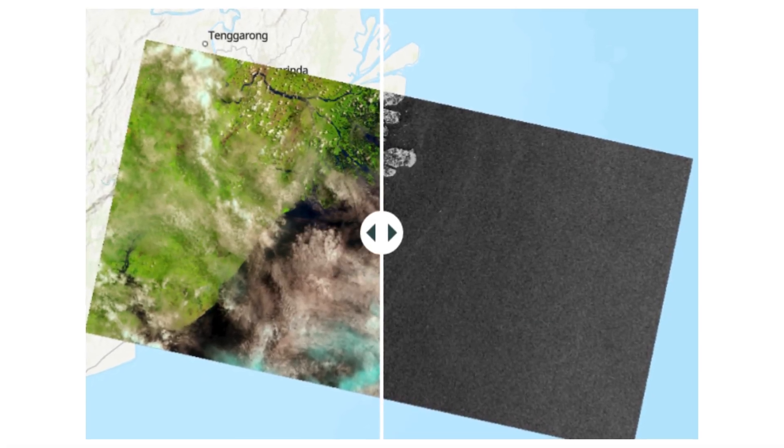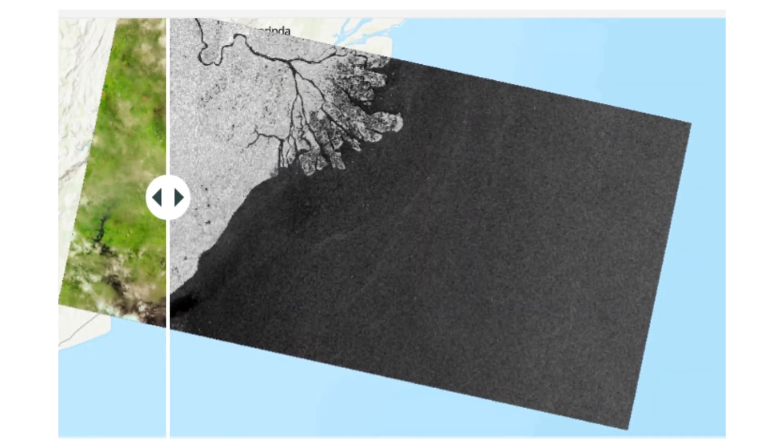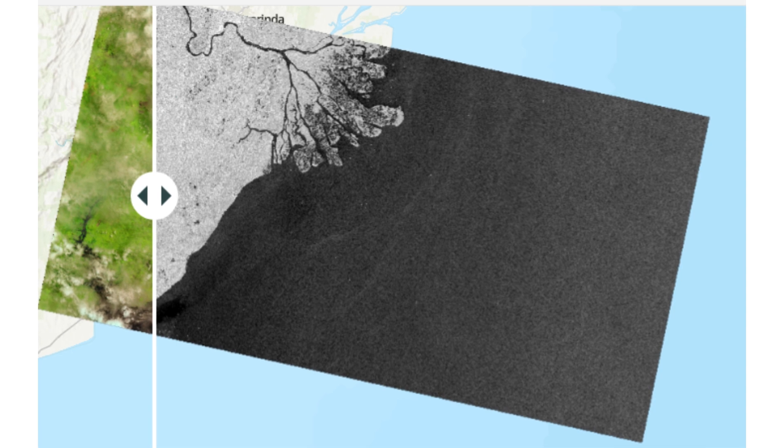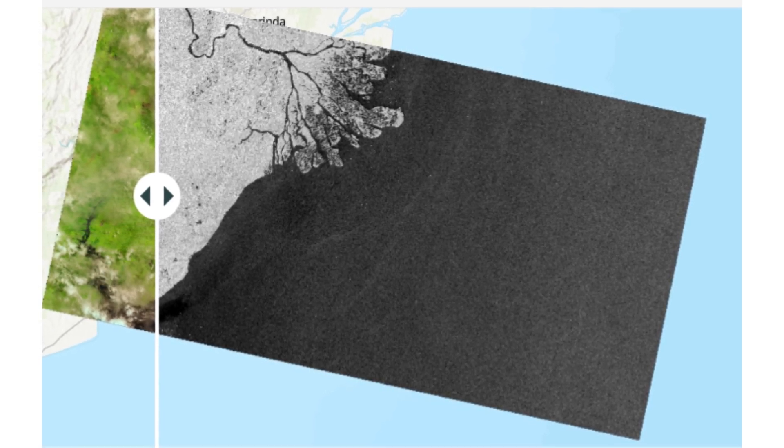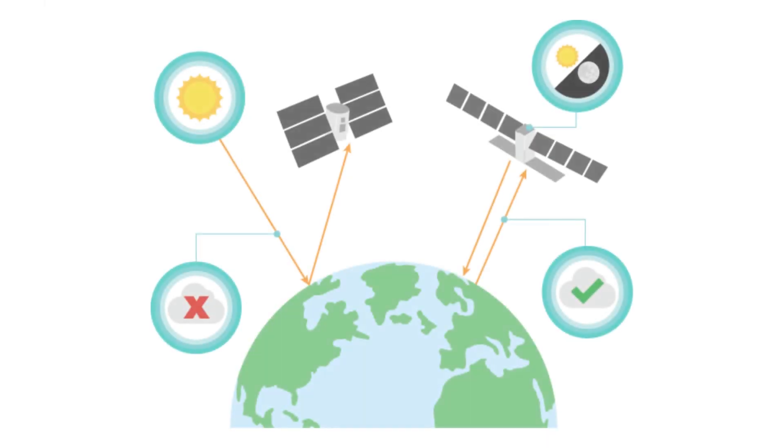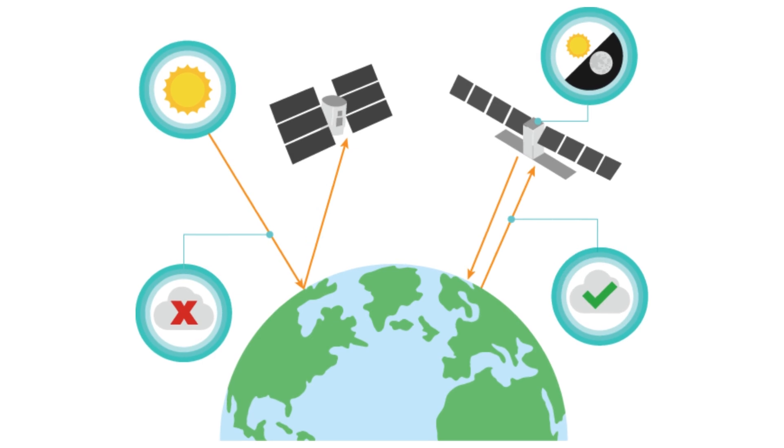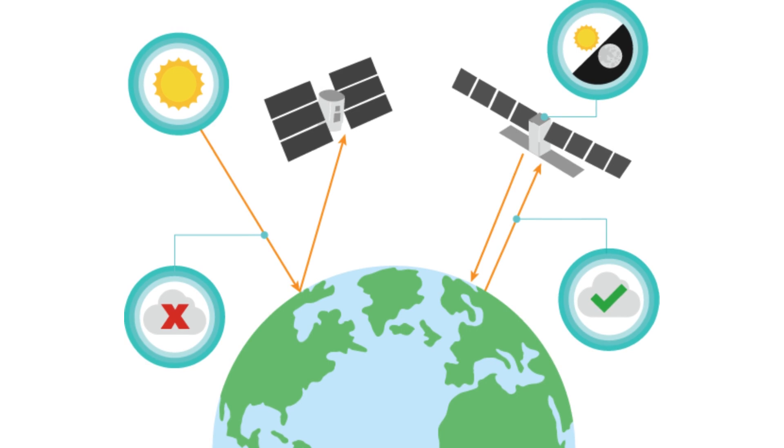A sensor can be classified as either passive or active. A passive sensor, using optical systems, records electromagnetic waves emitted by the sun and reflected from the ground surface. An active sensor, used by SAR systems, functions as both the source and the receiver. This means the sensor transmits the electromagnetic waves and also records the reflected waves.